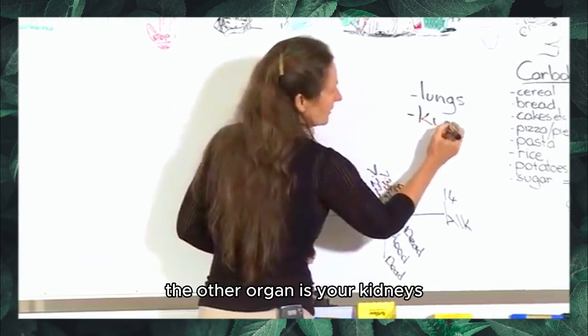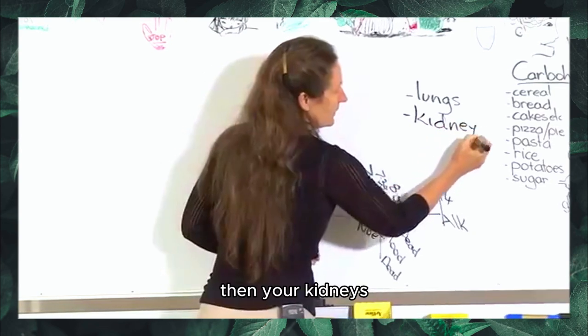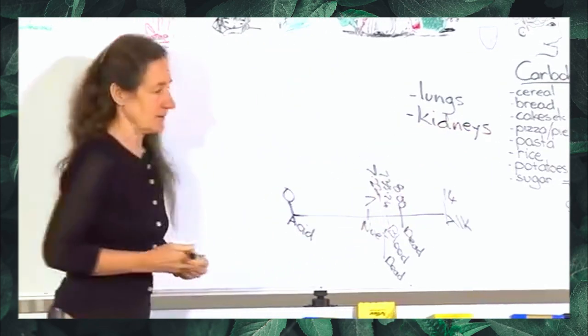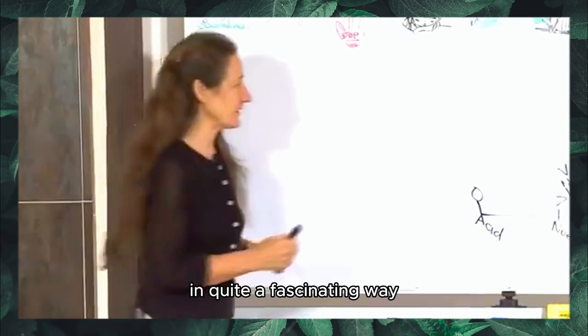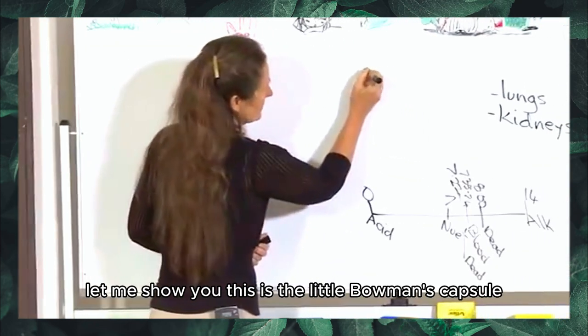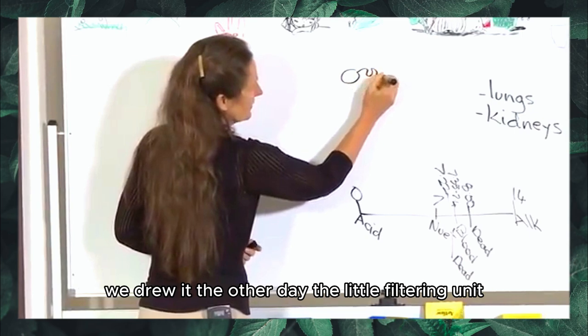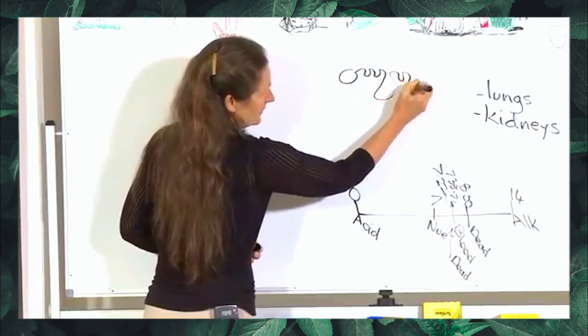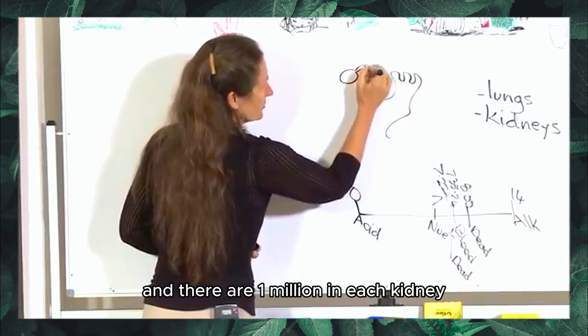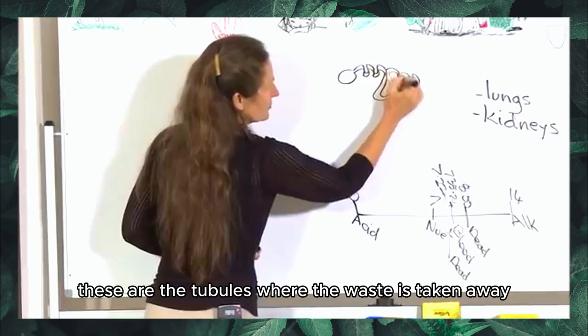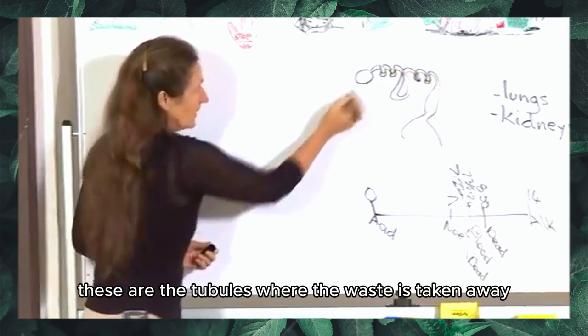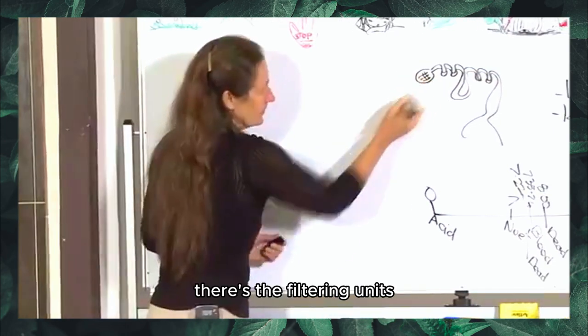The other organ is your kidneys and your kidneys balance the acid alkaline in your blood in quite a fascinating way. This is the little Bowman's capsule we drew the other day, the little filtering unit. There are one million in each kidney.